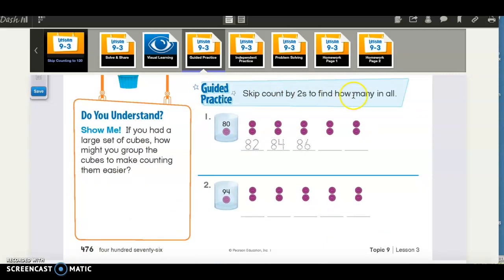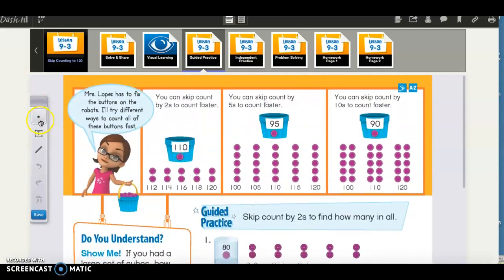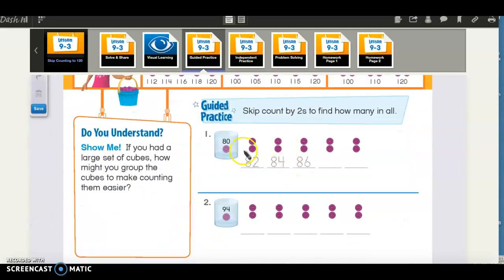Skip count by twos to find out how many in all. So right here it is saying there are already 80 in the jar. So let's practice skip counting together. And let me get out my pen. So you need to help me by saying it out loud. Ready? 80, 82, 84, 86, 88, 90.